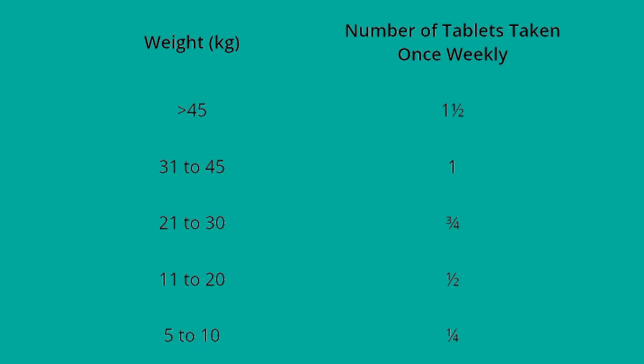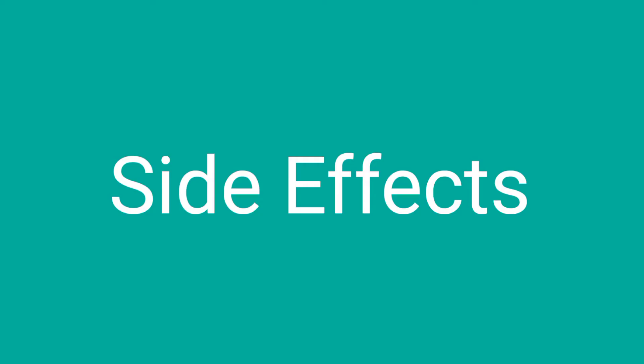For weight between 31 to 45 kg, there will be only one tablet. For patients with weight between 21 and 30 kg, the dose will be three-quarters of one tablet. If the weight is between 11 to 20 kg, the dose will be half a tablet. And if the weight is less than 10 kg, we prescribe about one-quarter of the whole tablet.